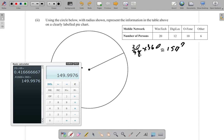Now for DigiLogic, it would be 12 over 48 times 360. This is a quarter of 360, which is 90 degrees. So this is 90 degrees.